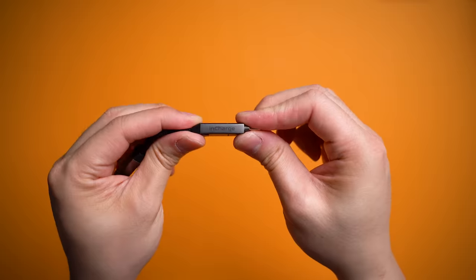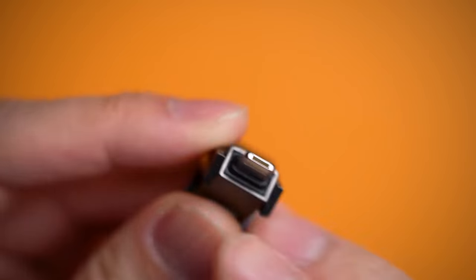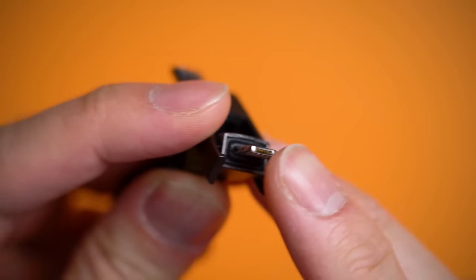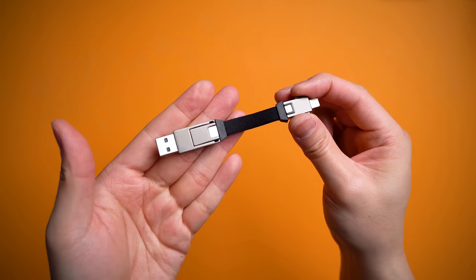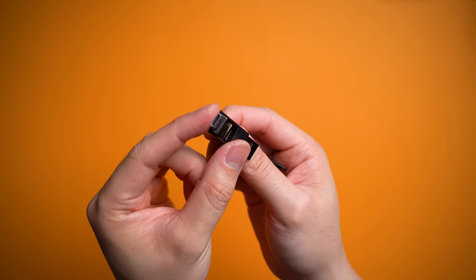However, it is those 6 cable options that make it worth every penny. Starting with a USB-C port that unclips to become a lightning connector. That also has a hidden micro-USB inside of that. Then the other side with a USB-A port that also converts into a USB-C option too.